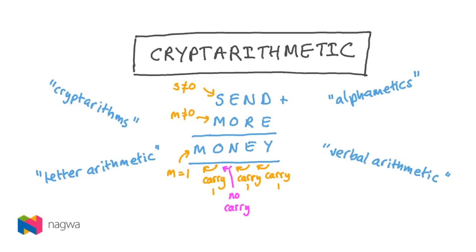In this video, we're going to learn about cryptarithmetic puzzles. Some people call them cryptorhythms or alphametics, but they're a type of puzzle which involves thinking cryptically about alphabetic characters in arithmetic calculations.